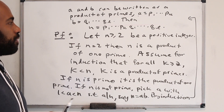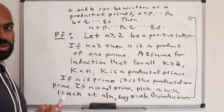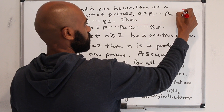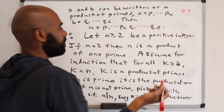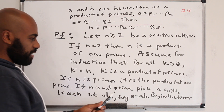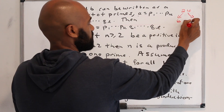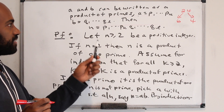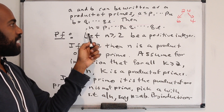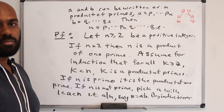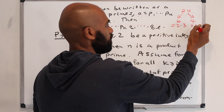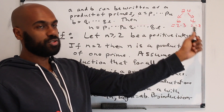Inductive proofs often give you algorithms. For example, to write 24 as a product of primes: 24 is not prime, so find a factor — say 6 and 4. Then 6 = 2 × 3 and 4 = 2 × 2, so 24 = 2 × 3 × 2 × 2.